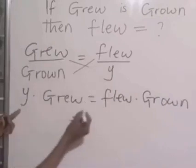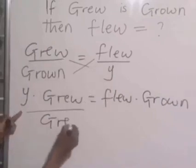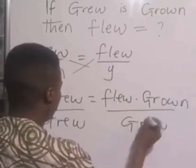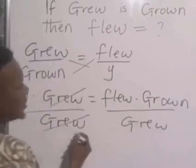So to get your y, divide both sides by grew. Divide both sides by grew so that grew will cancel grew.